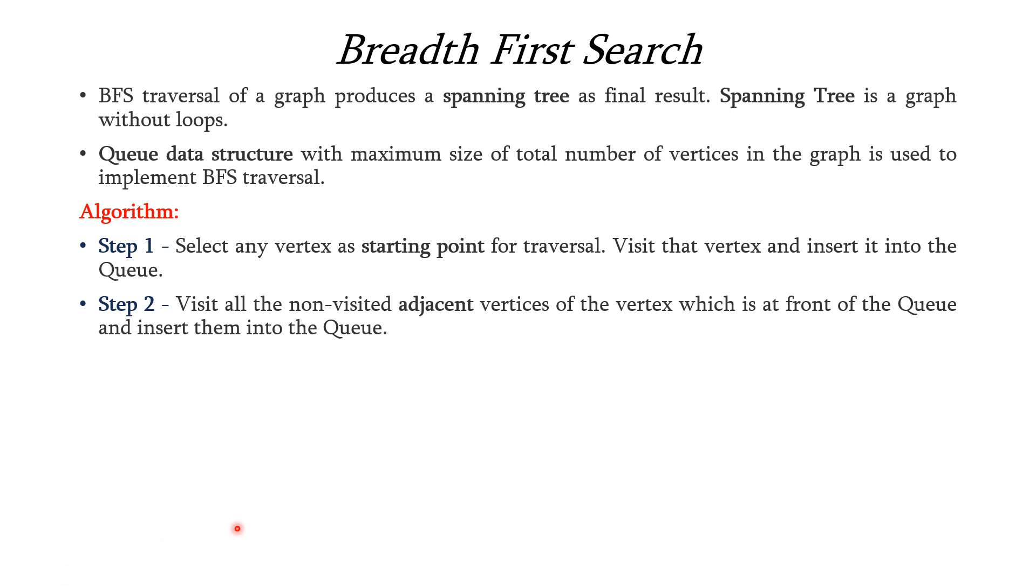Next, second step is we have to visit all the non-visited adjacent vertices of the vertex which is lying at the front of the queue and then insert these vertices into the queue. And step 3 is whenever there is no new vertex to be visited from that particular vertex then we have to remove that vertex from the front of the queue.